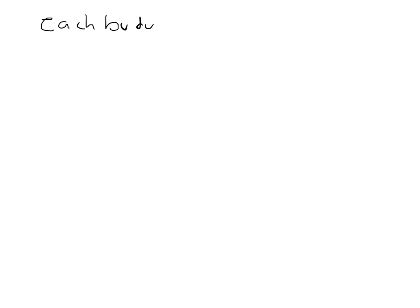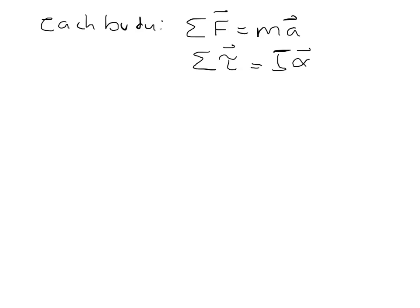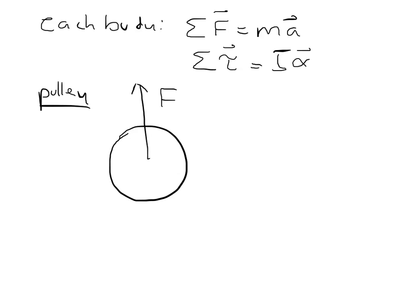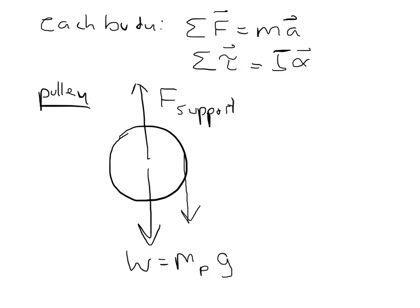The important thing to recall is that for each body, the sum of all forces is equal to mass times acceleration, and the sum of all torques is equal to I alpha, where I is the moment of inertia and alpha is the angular acceleration, and A is the linear acceleration. Let's do the pulley first. With the pulley, we have a force pulling upward — F support — the weight of the pulley pulling downward, which is the mass of the pulley times gravity, and a third force: the tension of the rope, pulling down on the right side with tension T.